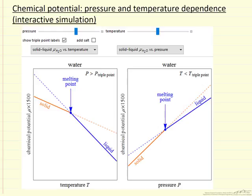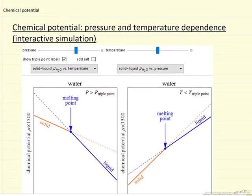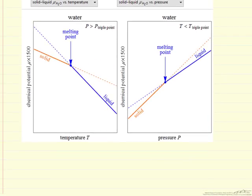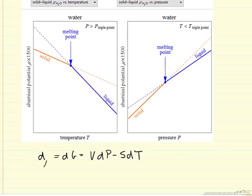The simulation is really based on just one equation, but it's an important one. The change in the Gibbs free energy for a single component is related to volume, pressure, entropy, and temperature. For a single component, the Gibbs free energy is the same as the chemical potential.